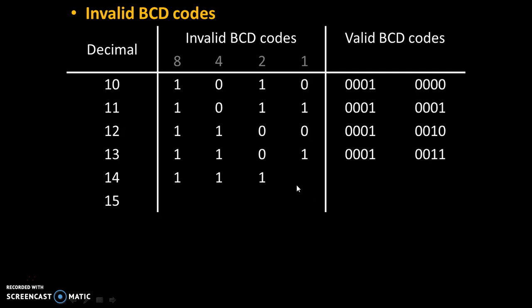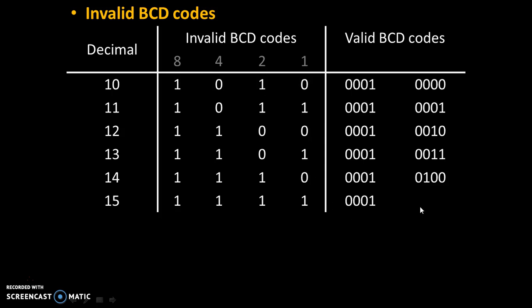14 can be written as 1110 in binary, which is an invalid BCD code. The valid BCD code for 14 is the code for 1 (0001) followed by the code for 4 (0100). Finally, 15 can be written as all ones (1111), which is an invalid BCD code. The valid BCD code for 15 is the code for 1 followed by the code for 5 (0101).